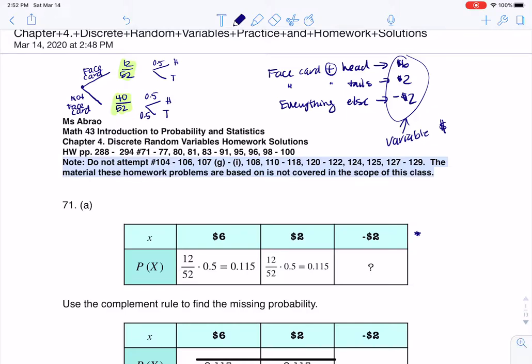So basically I have four outcomes, and let me change pen colors here. I have face card plus heads, I have face card plus tails, I have not a face card (or I could say face card complement) and I flip a heads, or not a face card and I flip a tail. And if I want to figure out each of those probabilities, I would multiply the appropriate branches. Now keep in mind, we were told that if we go with this option, we win six. With this option, we win two. With this option, we lose two. And with this option, we lose two.